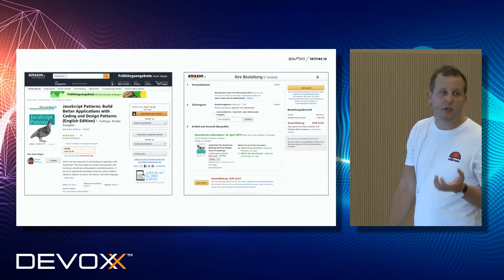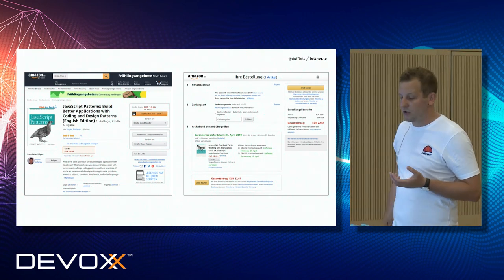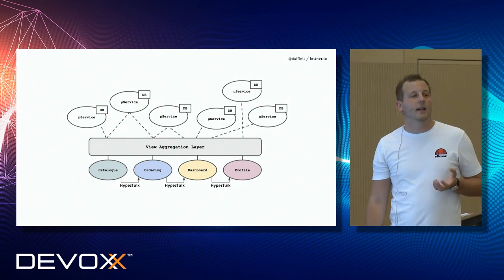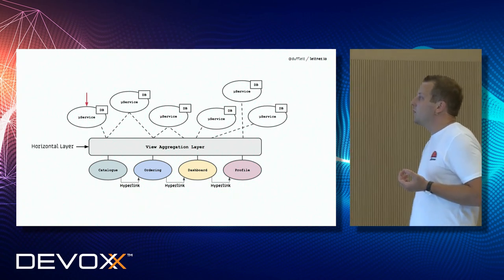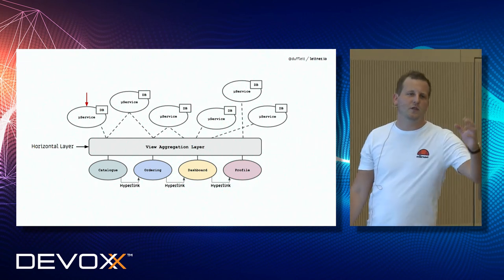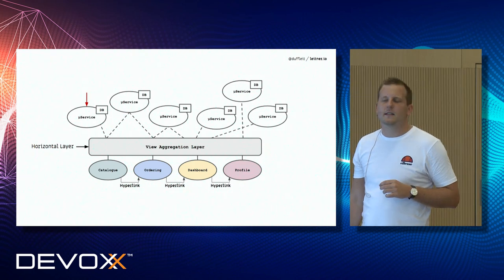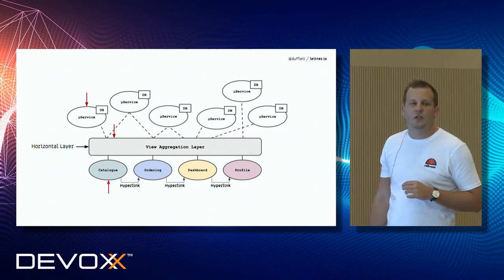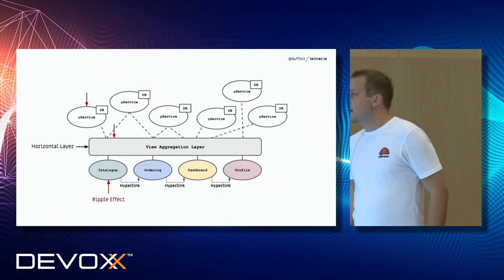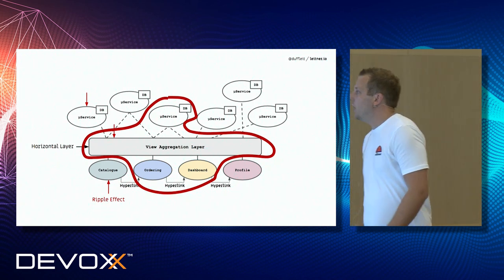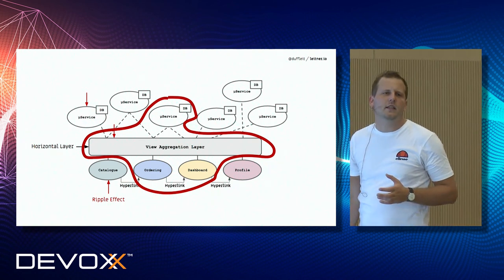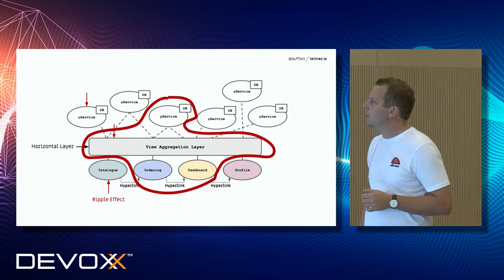The second issue is that we have a view aggregation layer again, which introduces an additional horizontal layer. When we started doing microservices, we wanted to get rid of these horizontal layers because if you change something here, you need to change it here, and then here — the ripple effect. We get this ripple effect back if we introduce aggregation layers. On the dashboard or ordering page, we have dependencies to multiple services and we lose full end-to-end verticalization.